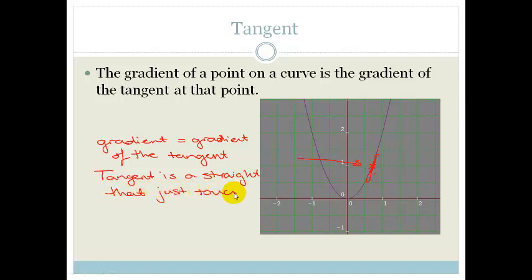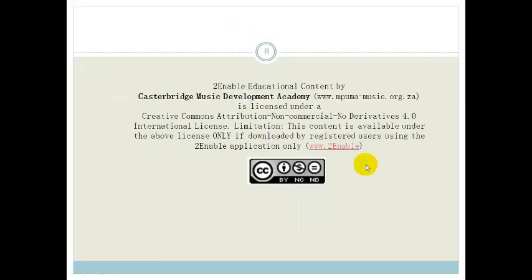So the whole point of this grade 11 lesson was just for you guys to understand that if we want to find the average gradient at a point on a curve, we need to get a very small gap between either side of that point to try and get as close as possible for it to look like a straight line. And that's it, grade 11. You're going to be using this more when we talk about differentiation later on. Have a lovely day.